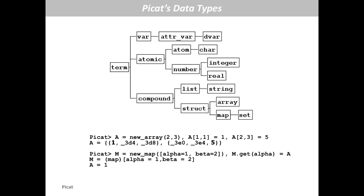Variables in PyCAD are just like Prolog logic variables. A variable is a value holder. A value is a term. A term can be another variable, or an atomic term, or a compound term. Most of these data types are from Prolog, except arrays and maps or hash tables.